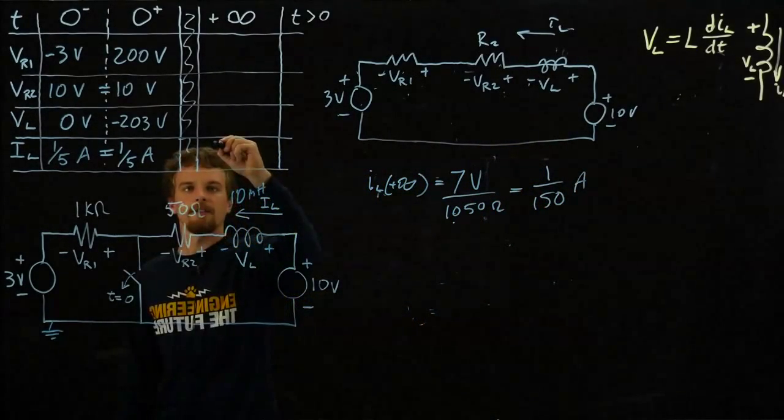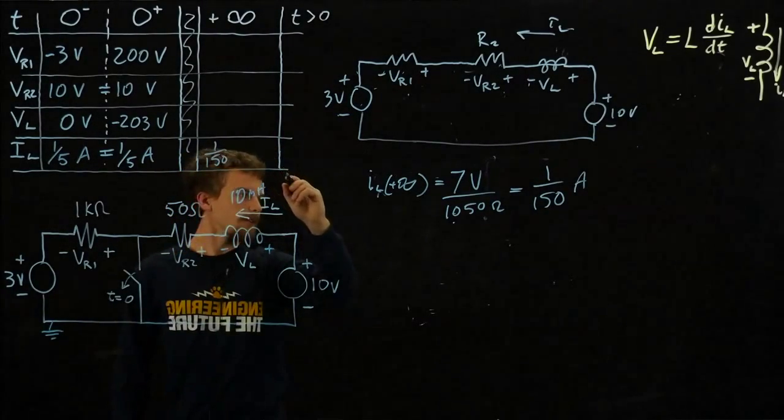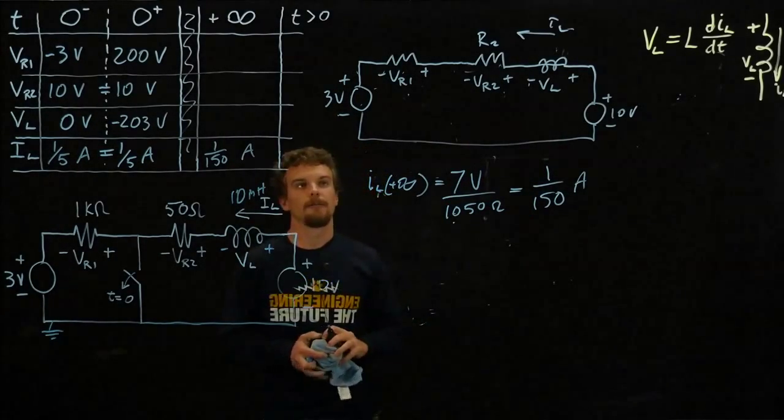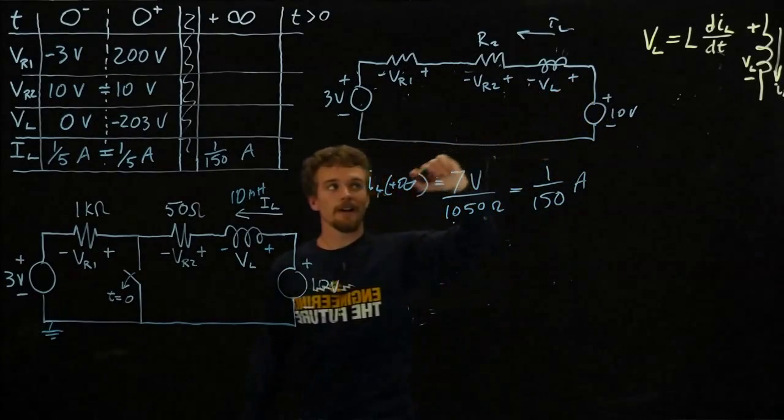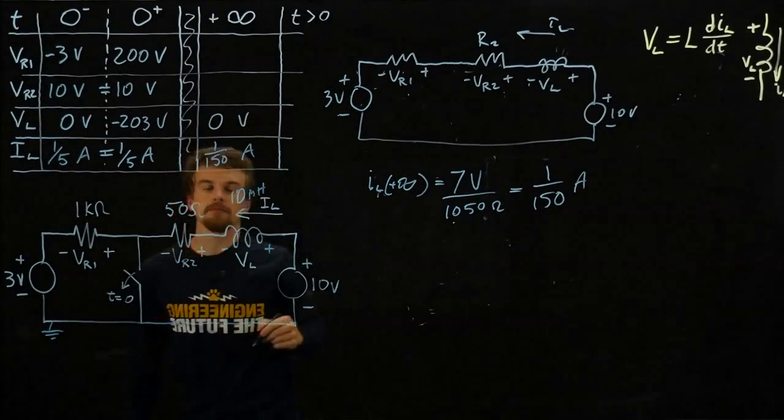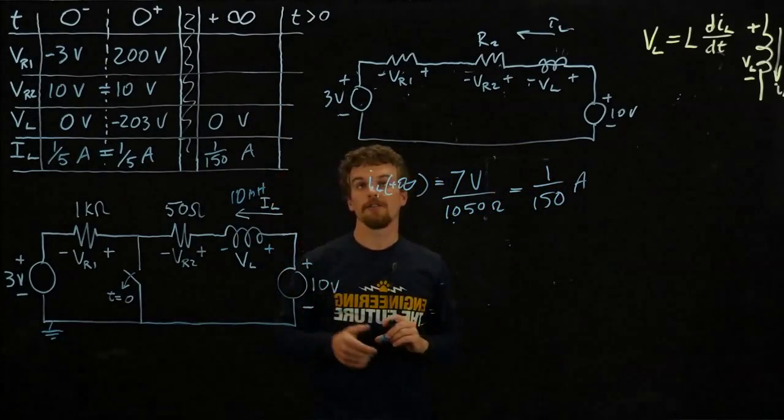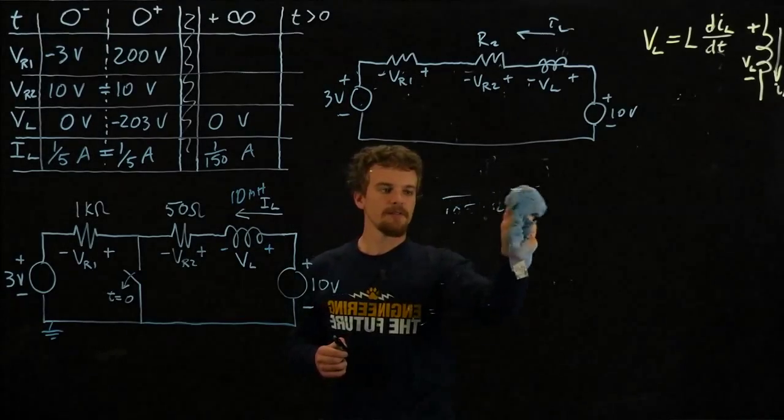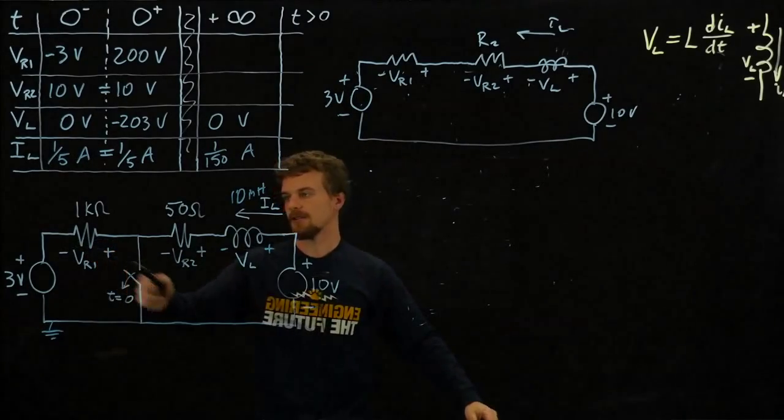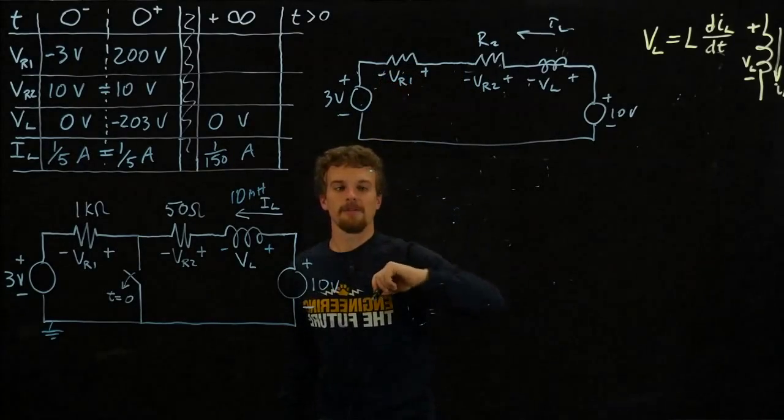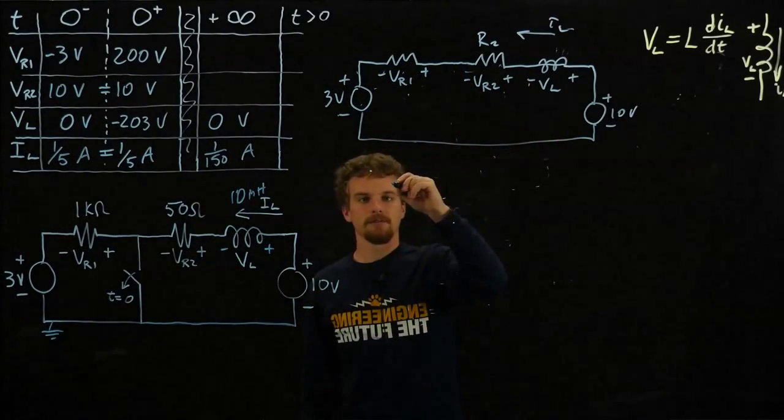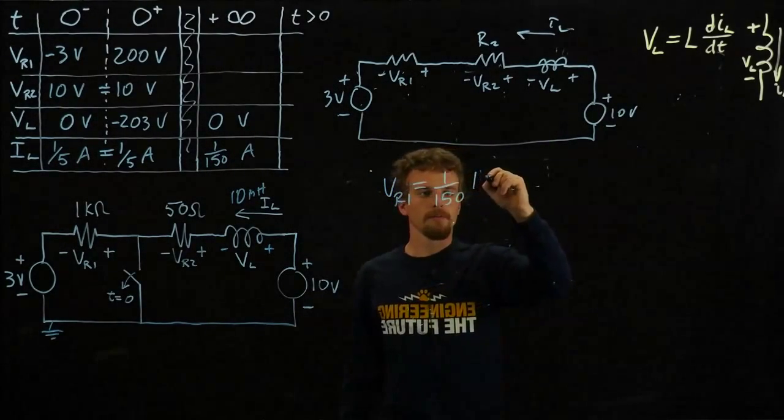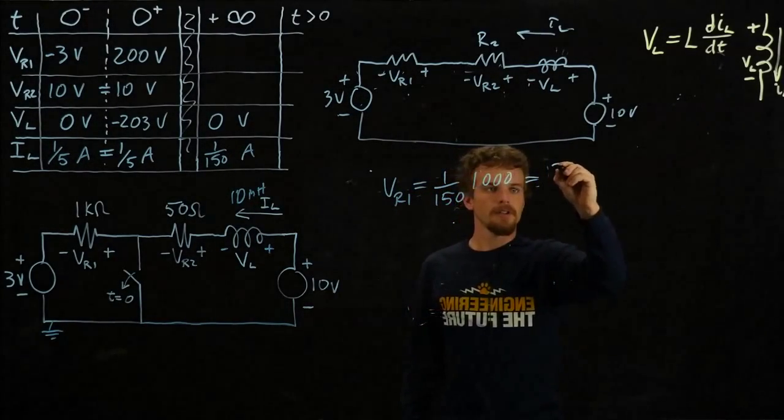Now we can put that in here. I prefer to keep stuff in fractions because they end up being a little more accurate. Now we know a current, and we could find the voltages across these resistors. We said it settled down, so the voltage across the inductor is zero again. Let's find these voltage values by taking the current and multiplying it by the resistances. Vr1 is going to be this voltage here. We have one over 150 amps flowing through 1 kiloohm. Vr1 equals 50 times 1,000, and that equals 20 over 3 volts.